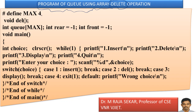Hash define MAX 4 means wherever MAX appears, that will be replaced by 4. Void del is a prototype declaration — in future, we will define a function whose return value is void and which will not return any value. The function name is del, through which we will not pass any parameters. Int q of MAX: since MAX is 4, a single-dimensional array will be created with size 4. Int rear equal to minus 1, front equal to minus 1 — front and rear are two integer type variables initialized with minus 1. Void main indicates the beginning of the C program.